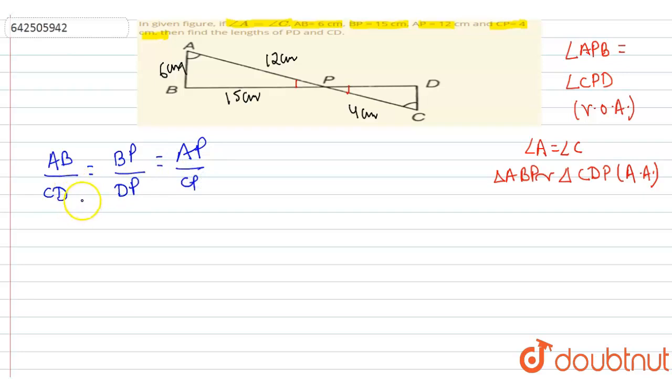So first of all, we will take AB by CD is equal to BP by DP. So AB is 6 by CD, the length of CD we don't know. So BP is 15 by DP, which again we don't know, that is equal to AP, which is 12 and CP, which is 4, so this is 3.